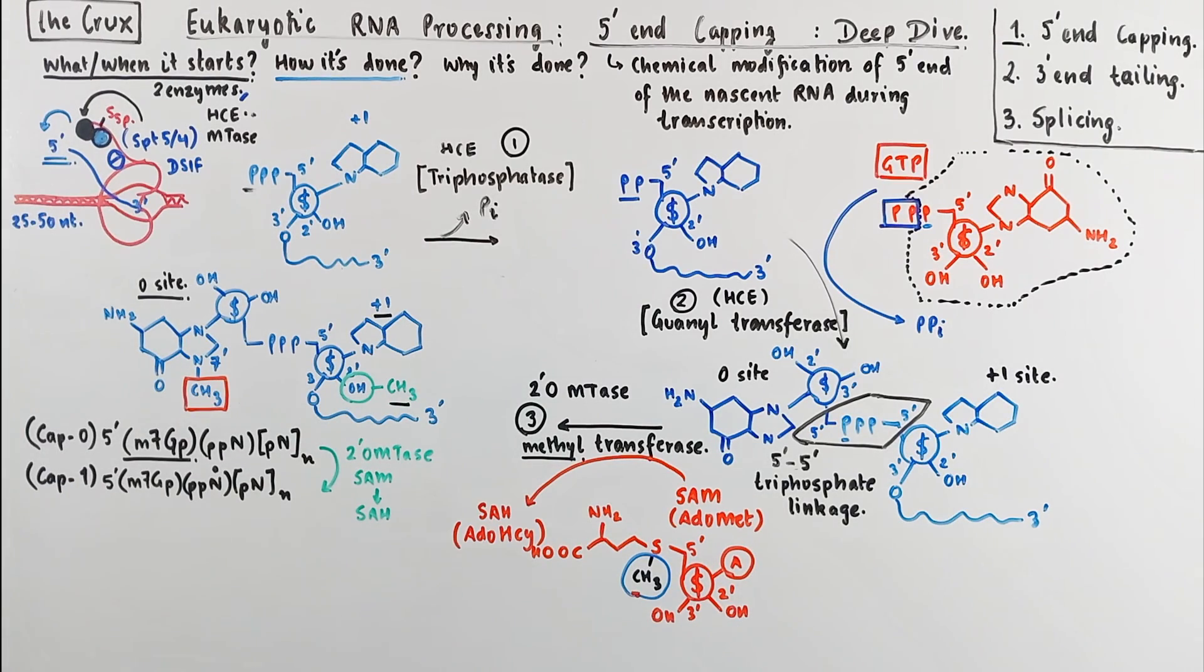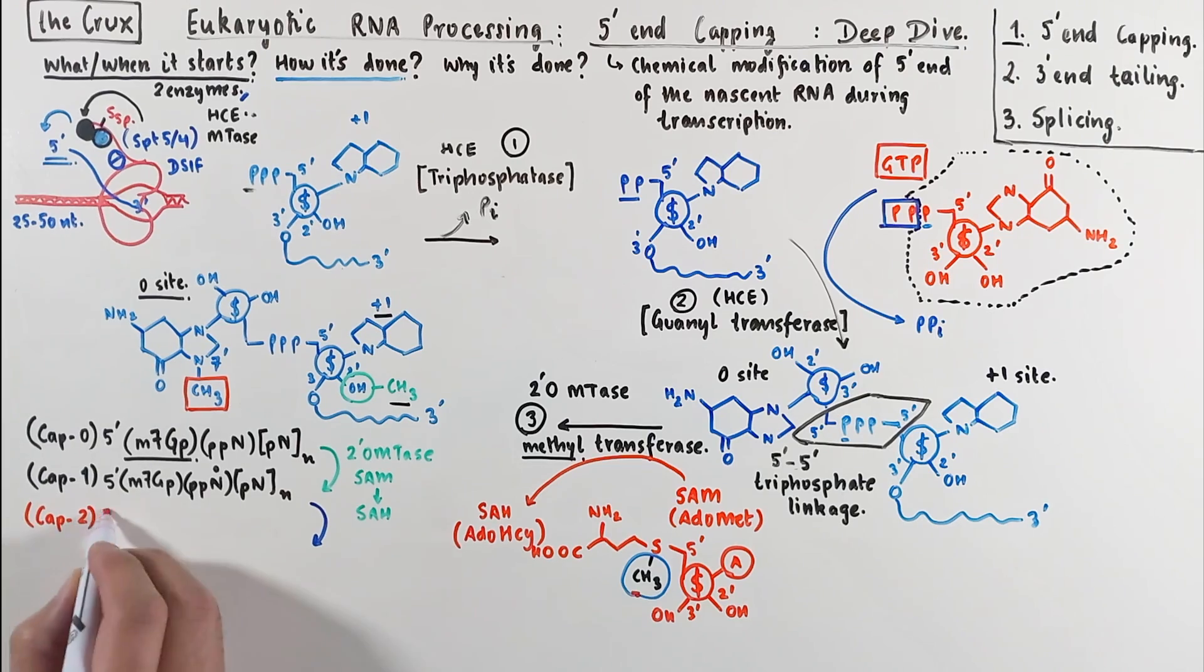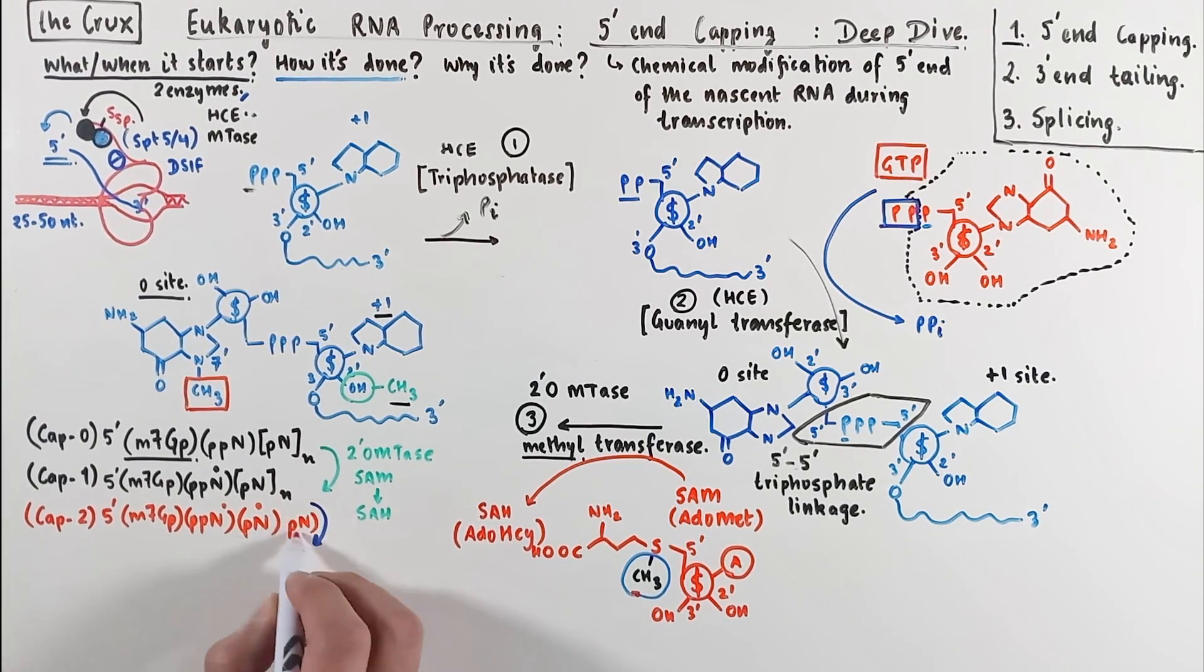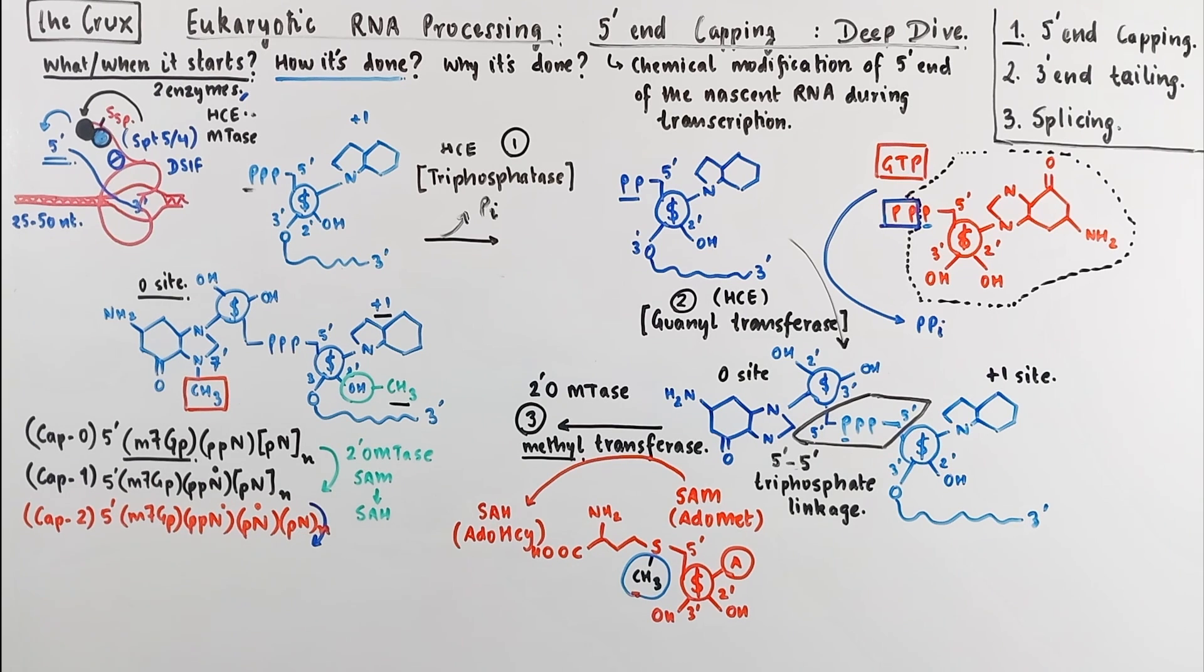Now that's not the end. The 2-oxymethyltransferase can, in some extreme cases, transfer the methyl group to the second carbon of the second site of the RNA. So you get site 0, site 1, and site 2 methylated. And this sort of cap is known as cap 2.